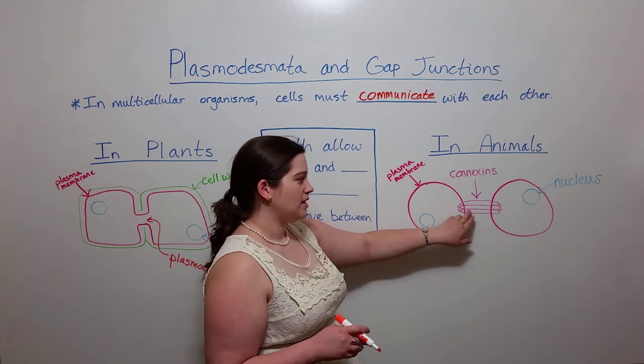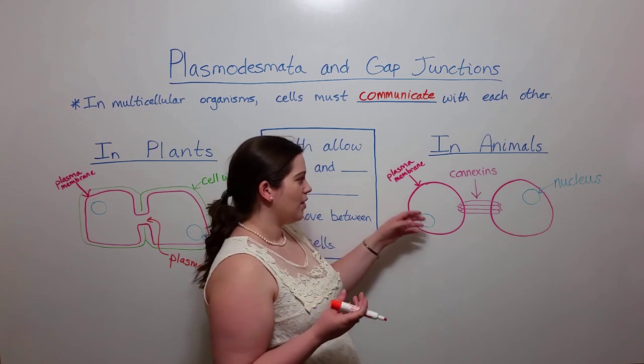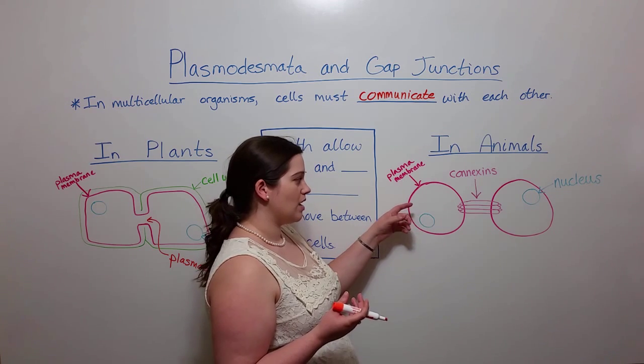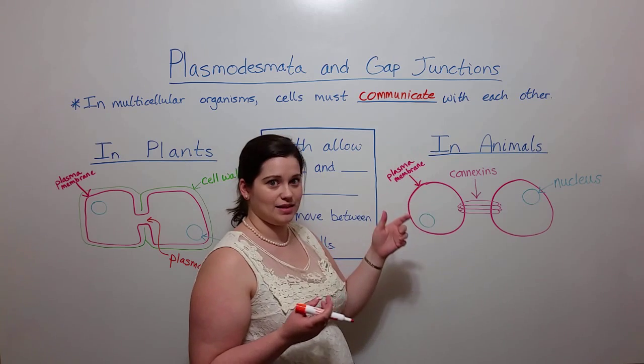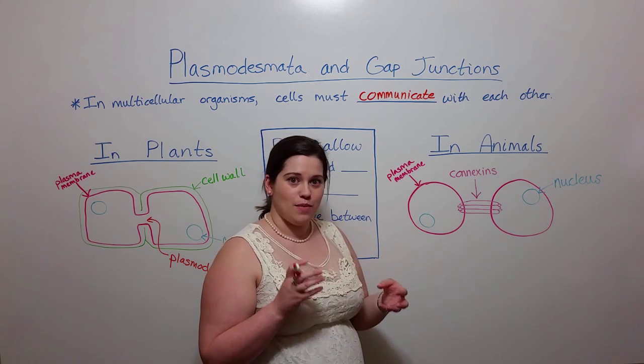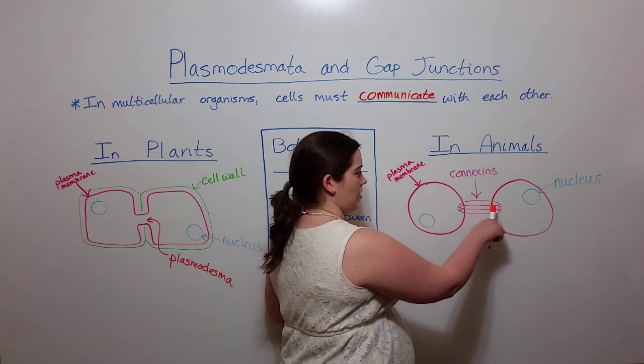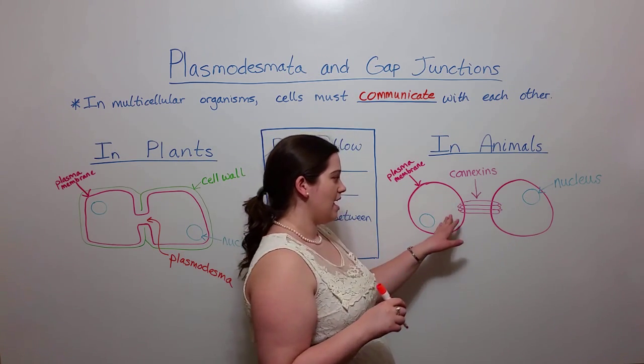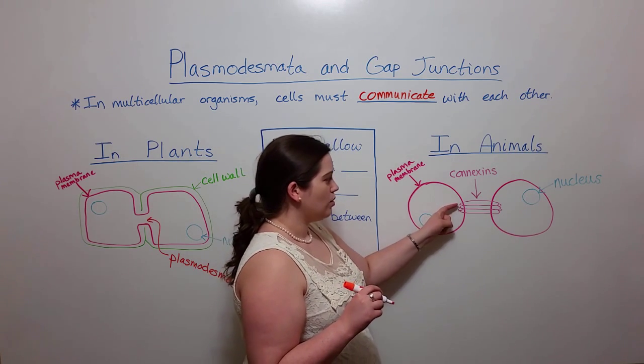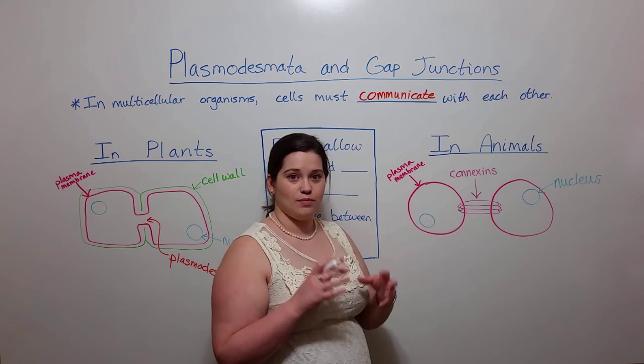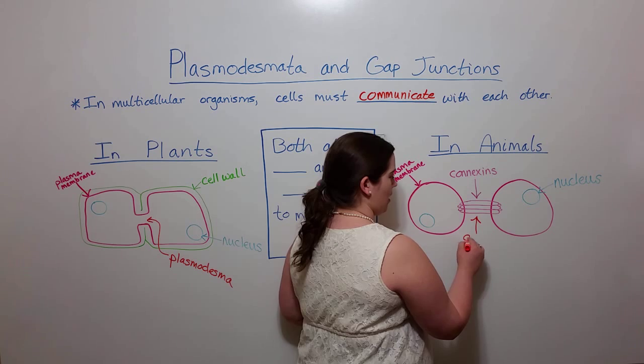There are these proteins that assemble to form a complex that allows them to connect the two cells. These proteins are called connexins and they form a transmembrane structure. That is they're inserted on either end into two different plasma membranes and the proteins themselves have a channel in between them. And that channel is called the gap junction.